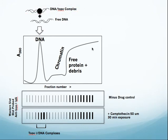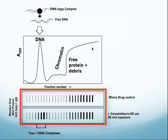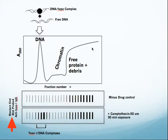You can then take individual fractions from the gradient and put them directly onto a slot blot, and then this slot blot can be probed with an antibody against topo-2 or topo-1, depending on the kit of your choice. What you see here is that in the absence of the drug camptothecin, there's no signal associated with the DNA fraction. In the presence of the drug, there's a very strong signal associated with the DNA peak, and this is what one would expect for a topo-1 poison.